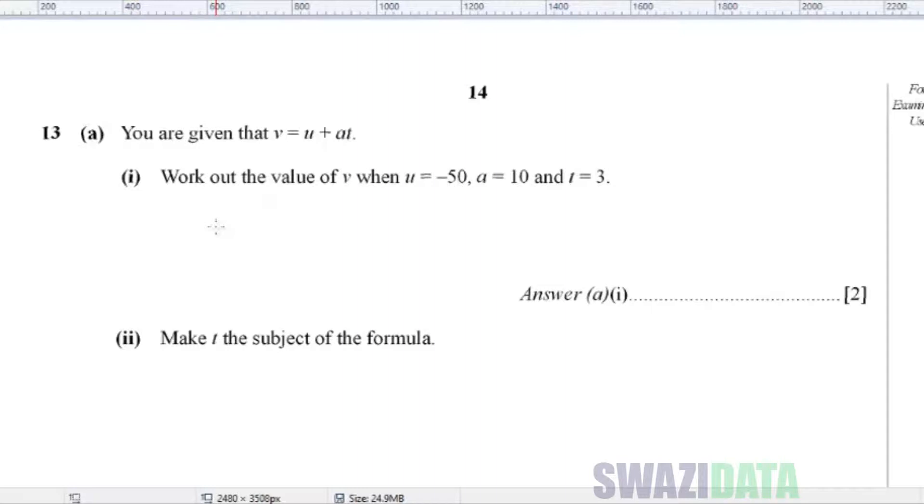So this is simple substitution. We'll have V is equal to U plus A T. So we have our value of U as minus 50 plus value of A is 10 multiplied by 3, which is T. So we multiply first, so you'll have minus 50 plus 30. So minus 50 plus 30 is the same as 30 minus 50. And our answer V will be equal to minus 20.